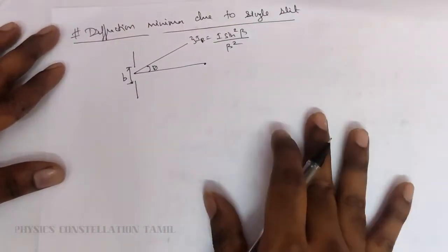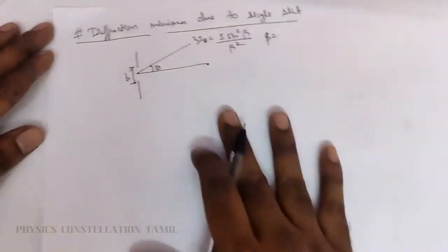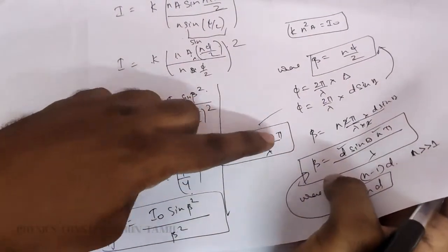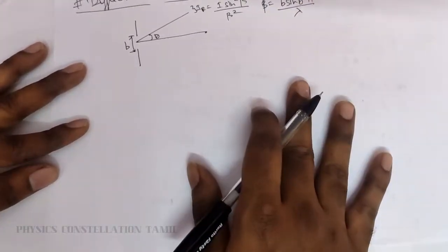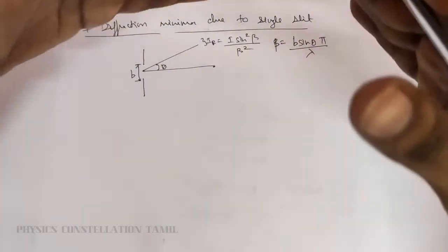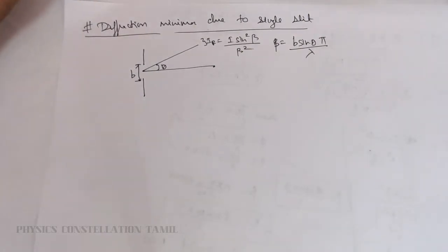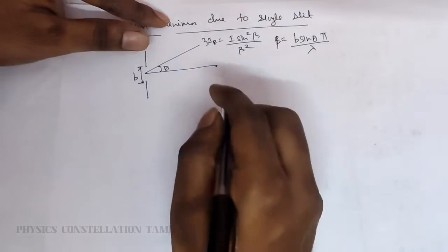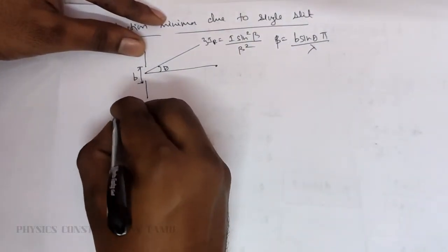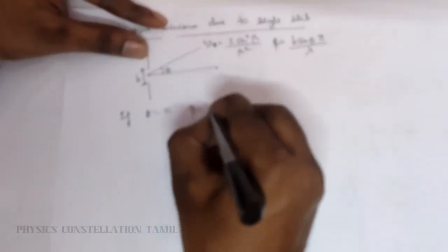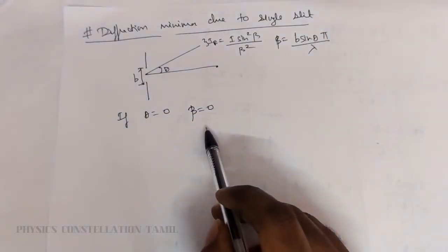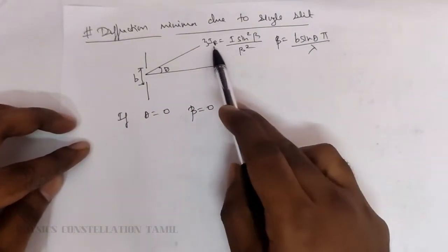This is the central maxima. The resultant intensity is I₀ sine squared beta divided by beta squared, which is a function of theta and slit width B. The condition to apply is: beta equals n. That is, B sine theta divided by pi by lambda. When theta equals zero, beta equals zero, and when beta equals zero the denominator overall value approaches zero over zero — but the overall intensity at theta equal to zero is maximum.